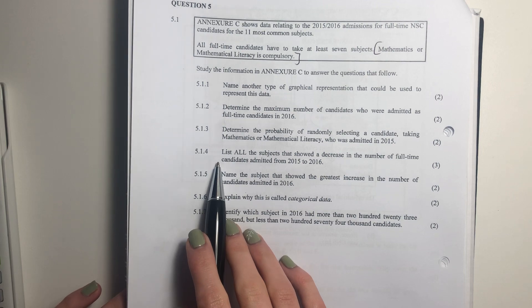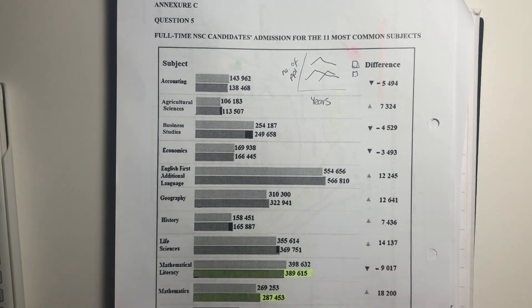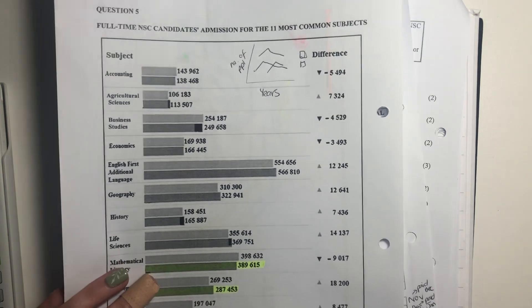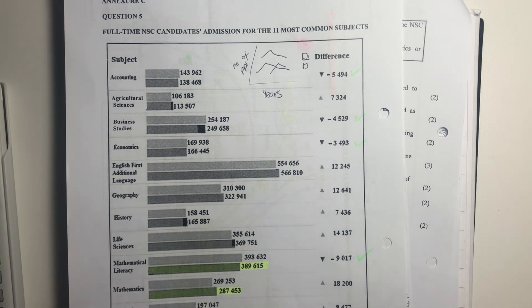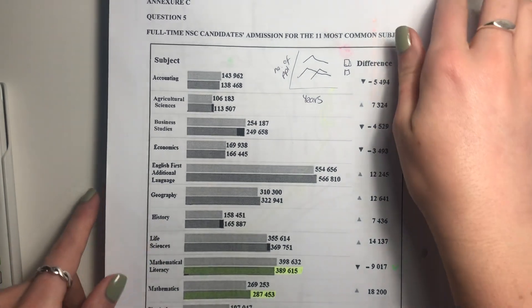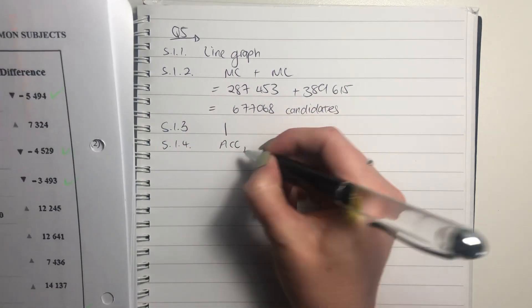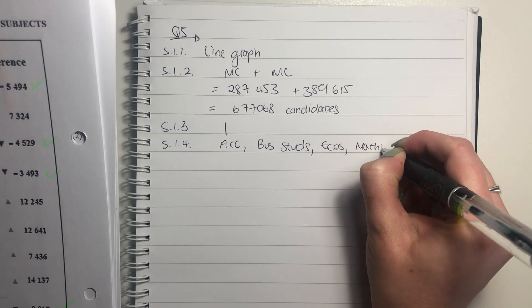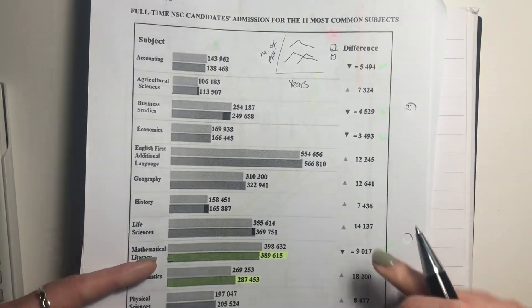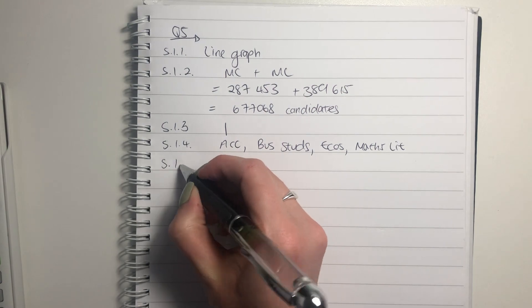5.1.4: List all the subjects that showed a decrease in the number of full-time candidates admitted from 2015 to 2016. What's quite nice is they've shown us the difference on the side, so we don't even have to do the maths. We just look at the ones that went down. So there were four subjects that went down: Accounting, Business Studies, Economics, and Maths Lit. Please write these out fully. The rest of them all went up, so we're not concerned with those because that's not what they asked.